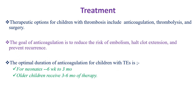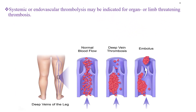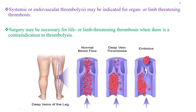The optimal duration of anticoagulation includes 6 weeks to 3 months for neonates and 3 to 6 months for older children, but if the cause is inherited, treatment can be lifelong. Patients with strong inherited thrombophilia, recurrent thrombosis, and antiphospholipid antibody syndrome may require indefinite anticoagulation. Systemic or endovascular thrombolysis may be indicated for organ- or limb-threatening thrombosis, and surgery may be necessary when there is a contraindication to thrombolysis.